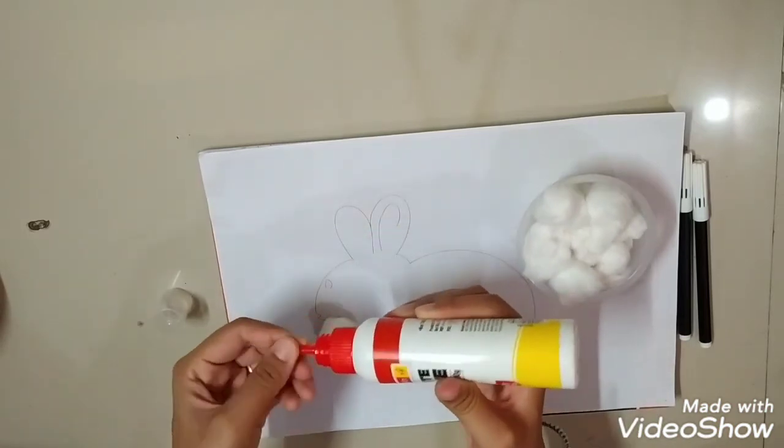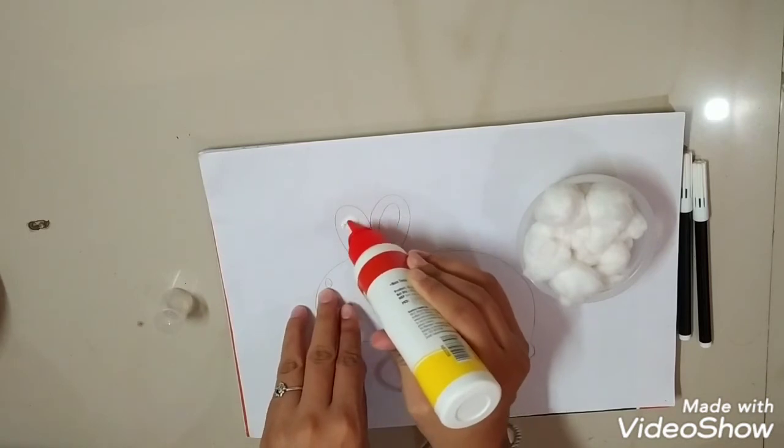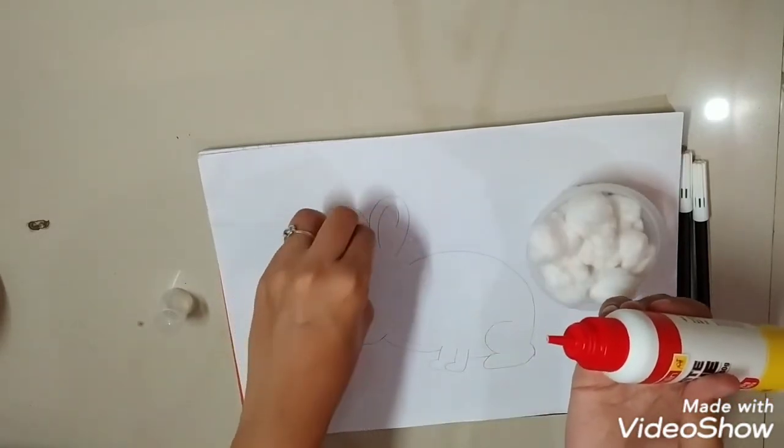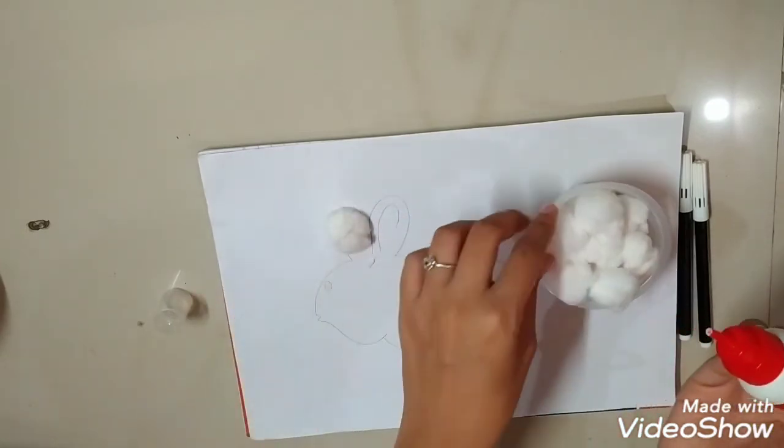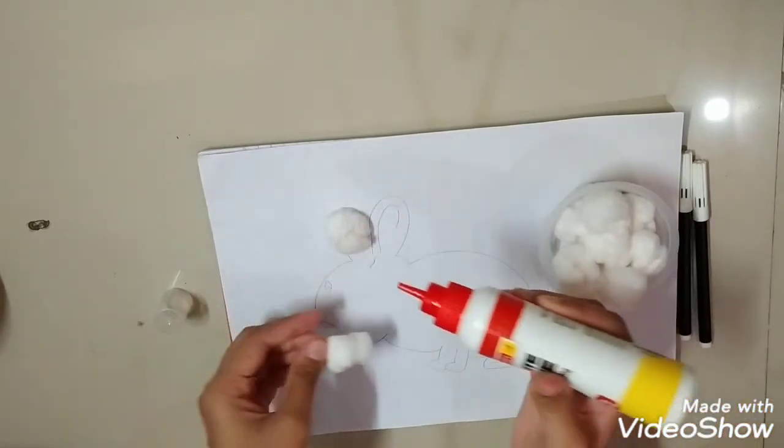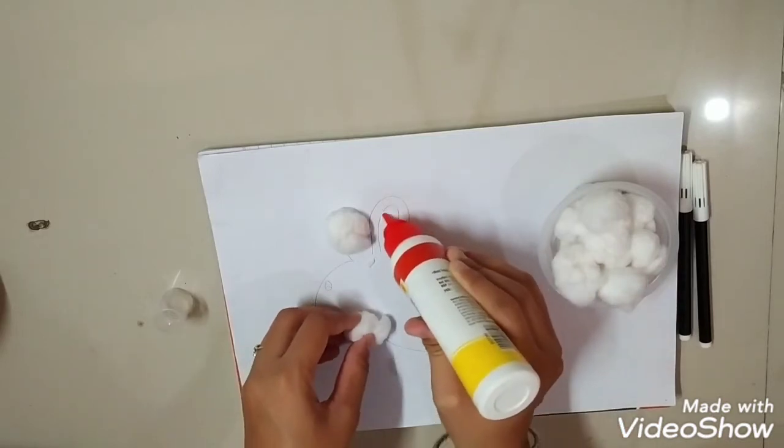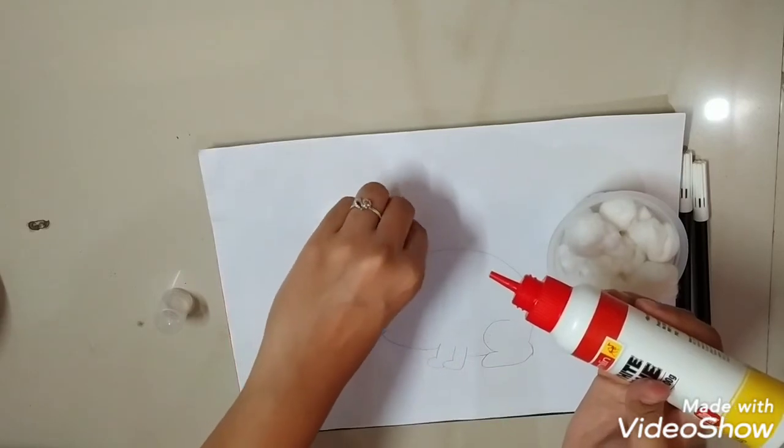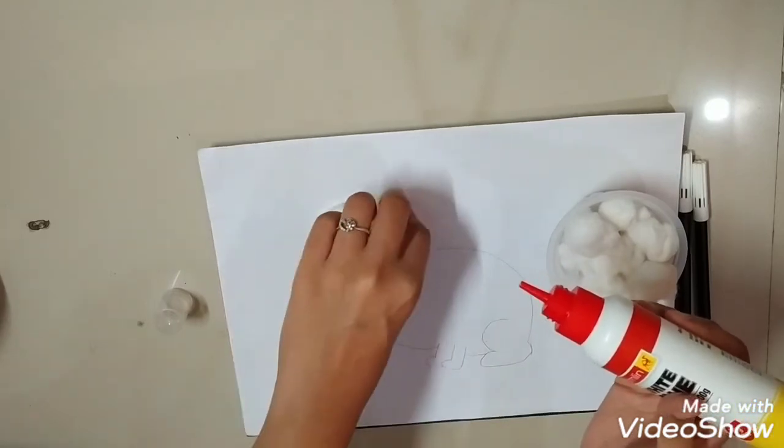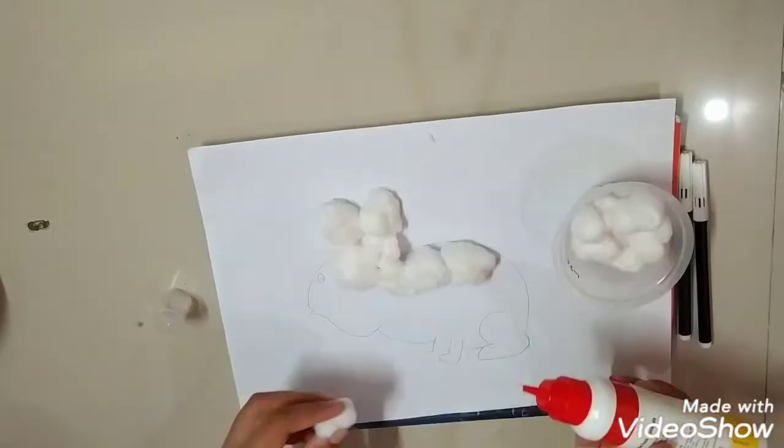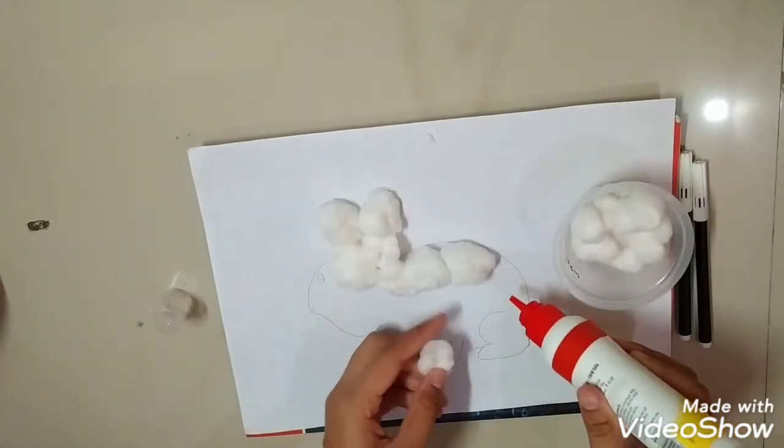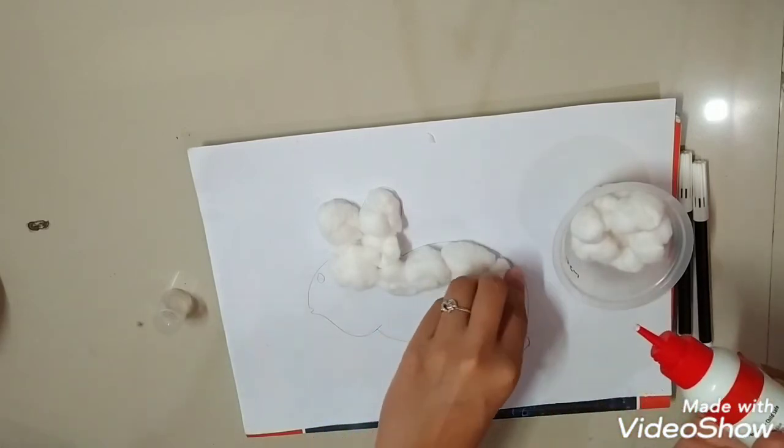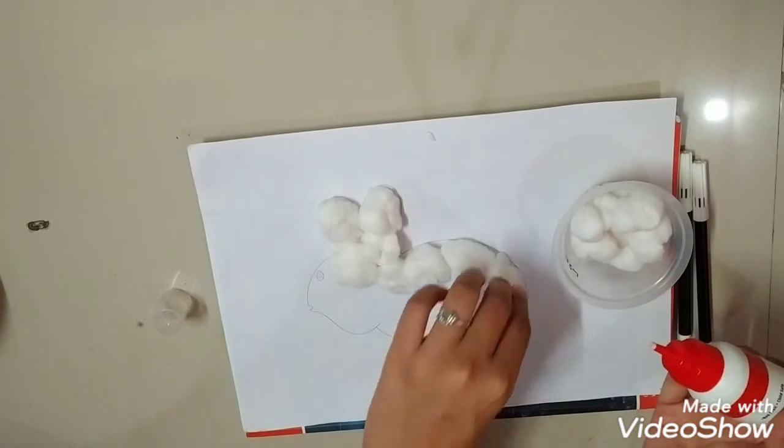You will paste the glue this way and you will stick it here. I am taking it over here. Sticking it over here. Over here like this. See, I have completed till now this way. Stick it over here. This way.